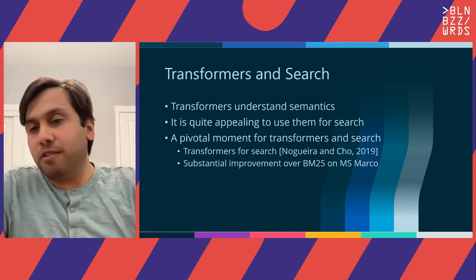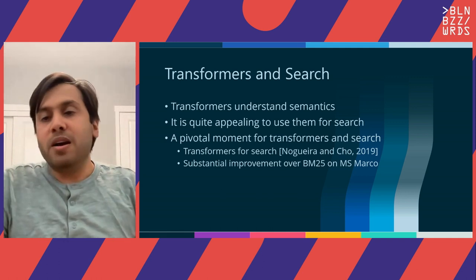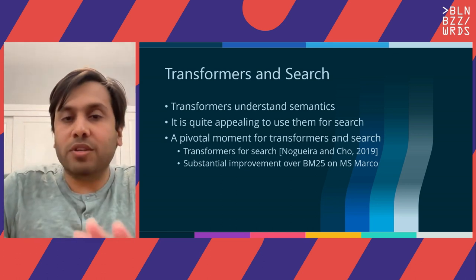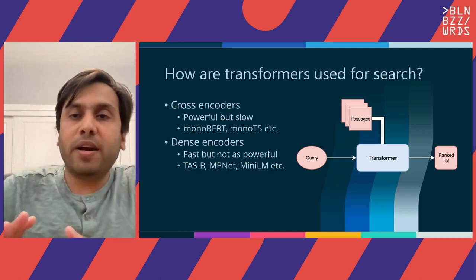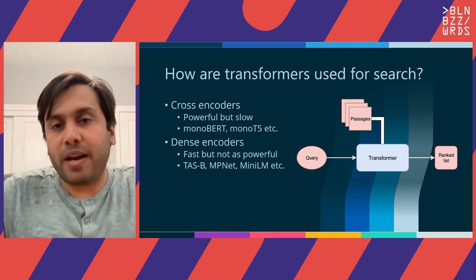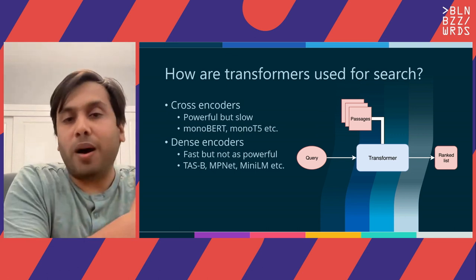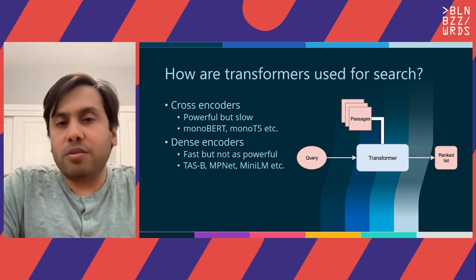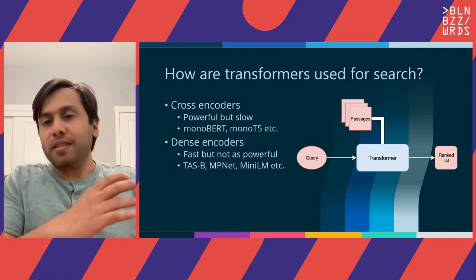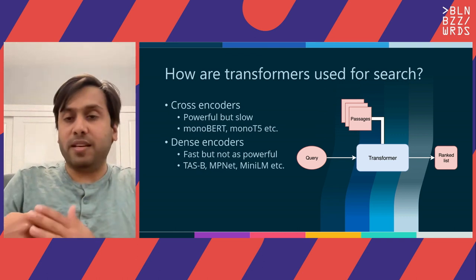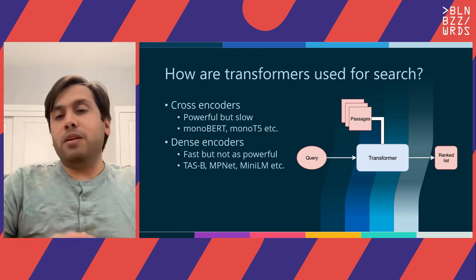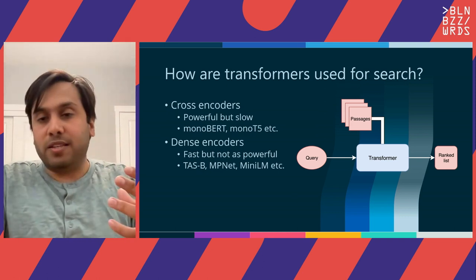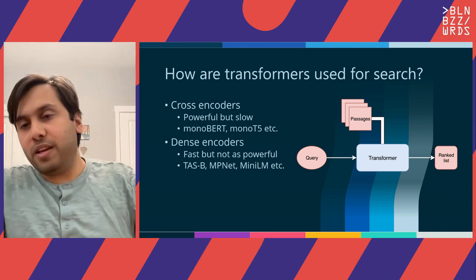The first pivotal moment came when Transformers were used for search in this 2019 paper, and it was shown that training Transformers for search led to a substantial improvement over BM25. Ever since then there has been a flurry of work with different architectures and models released. The community has narrowed down into two main paradigms: the cross encoder paradigm and the dense encoder paradigm. Cross encoders are powerful but slow, while dense encoders are fast but not as powerful. A Transformer for search: a query comes in, the Transformer reads the query.